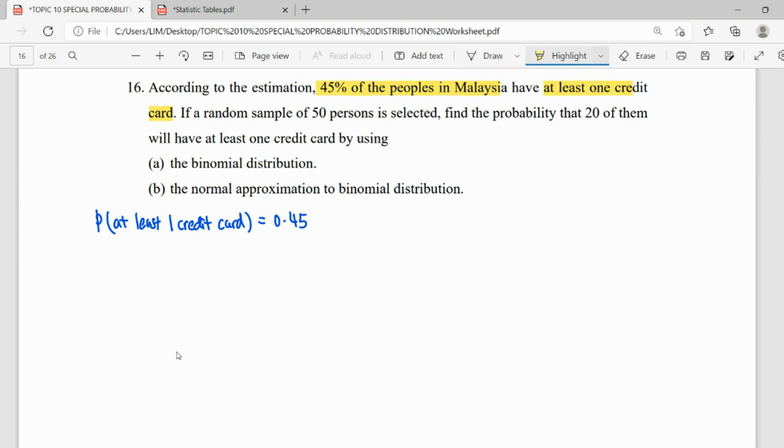So this question they said you have a random sample, so n is 50 for your sample. So find the probability that 20 of them have at least one credit card.